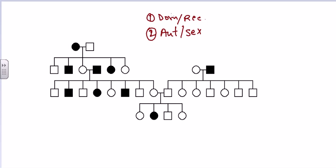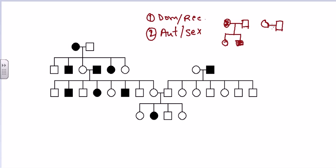If the parents are unaffected, they must not transfer any kind of disease to the offspring. So in a dominant trait, if one of the parents is affected, they are going to transfer this infection to their offspring. But if both parents are unaffected, there is no way for their offspring to be affected.